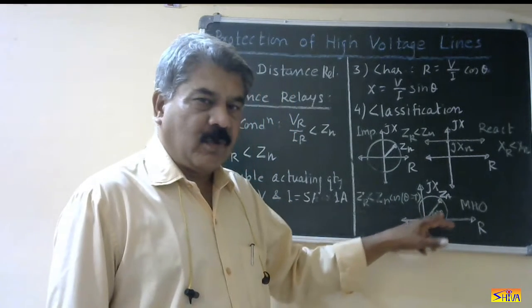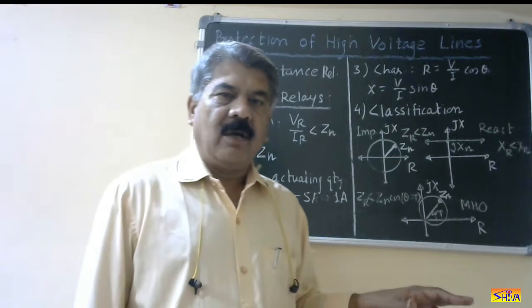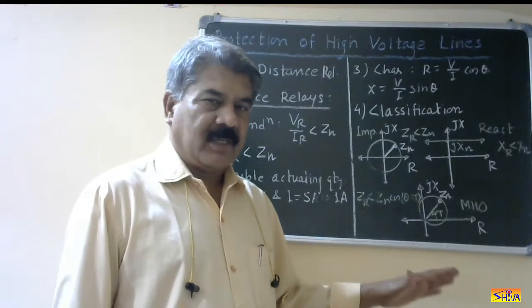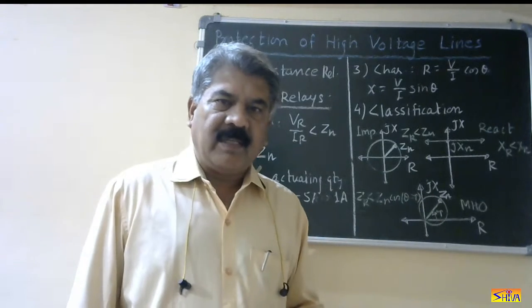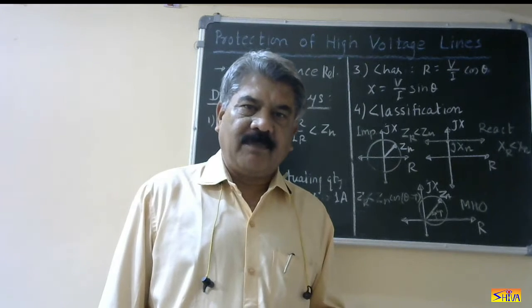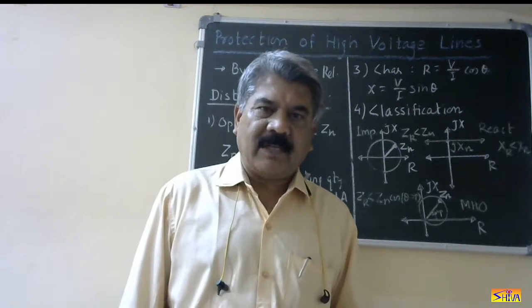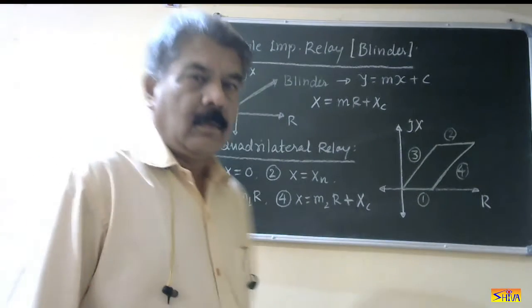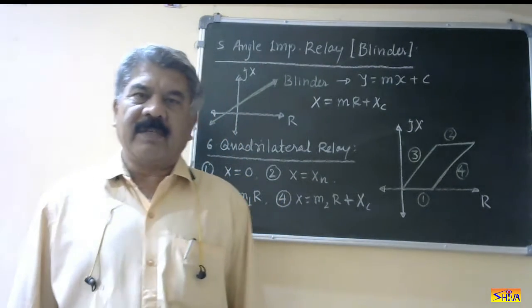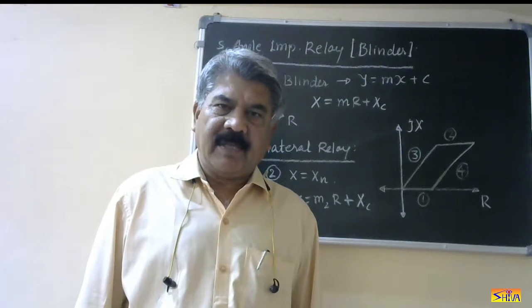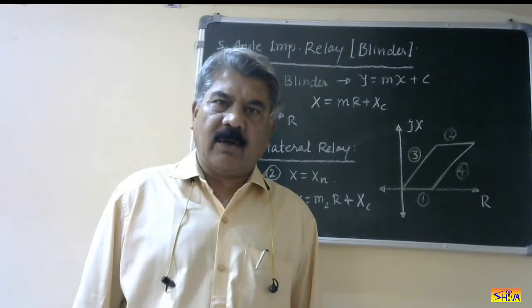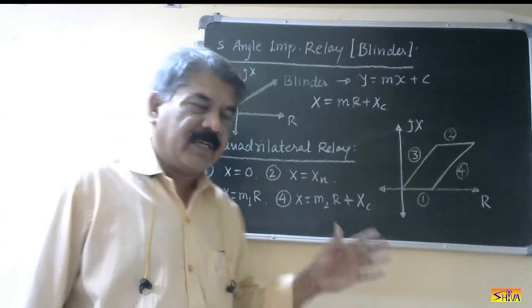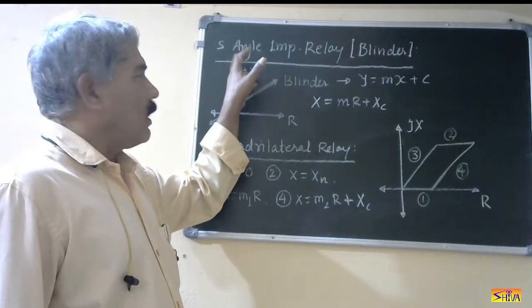If the characteristic of the mho relay is shifted from the origin, that is called the offset mho relay. So these are the four conventional characteristics: impedance relay, reactance relay, mho relay, and offset mho relay. Along with these, there are two non-conventional or unconventional characteristics used in power system protection, which I will explain today.